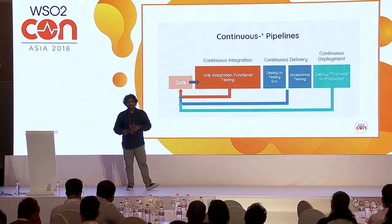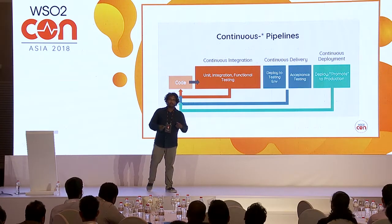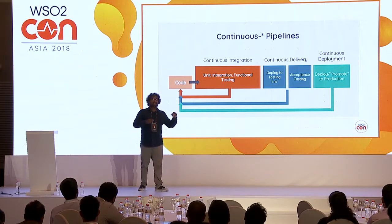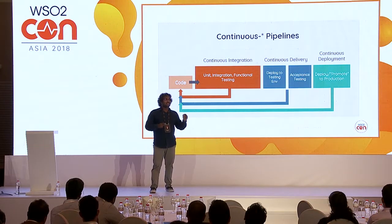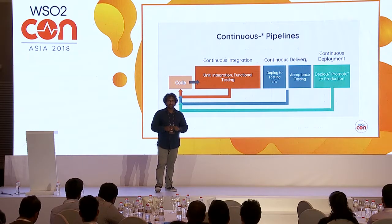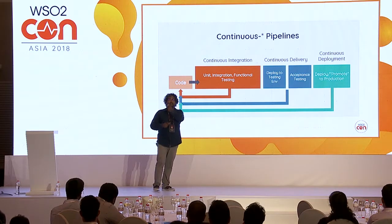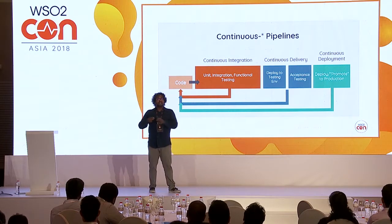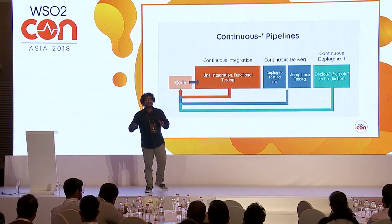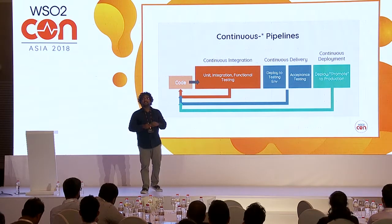That's what continuous integration means — it's a process that happens continuously. Then comes continuous delivery, which means in a pipeline you usually have multiple environments: dev, test, staging or pre-prod, and production. Continuous delivery means your changes have to go through each and every environment in an automated way. Continuous deployment, on the other hand, only talks about the production environment — the process of promoting your changes into production is known as continuous deployment.